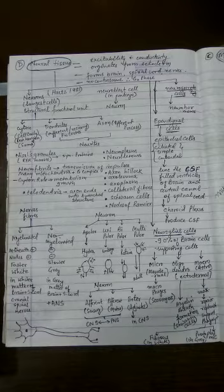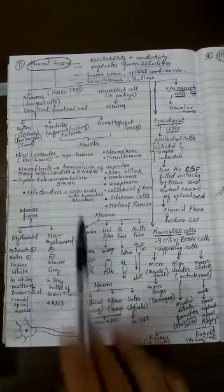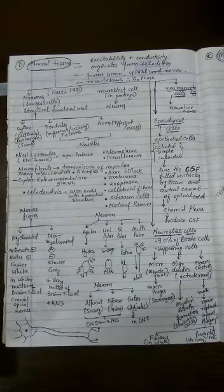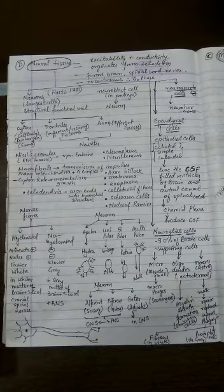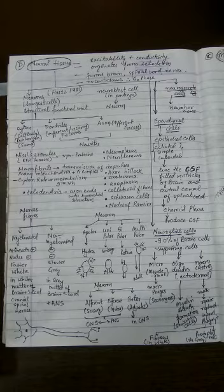Then we have neurofibrils also. Neurofibrils are for transmission of the impulse. Then there are many mitochondria, huge amount of Golgi complex, and the role of cyton basically is to perform metabolism and perform growth.